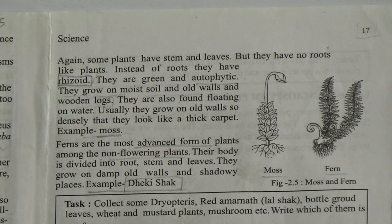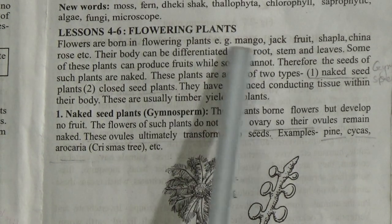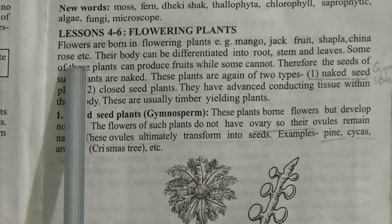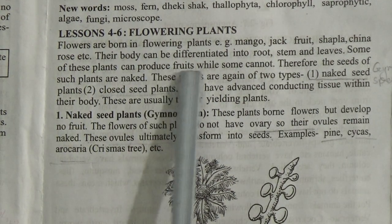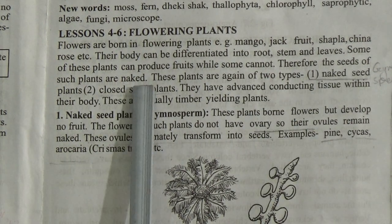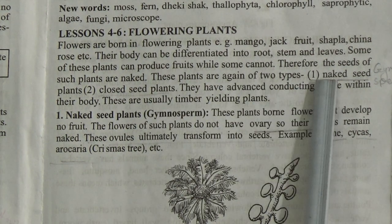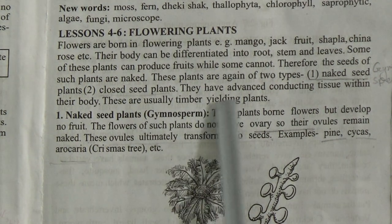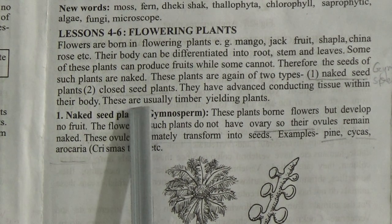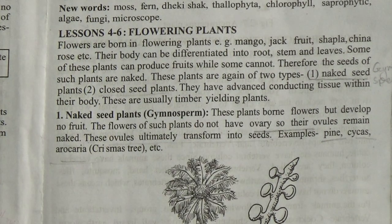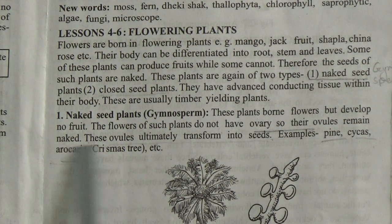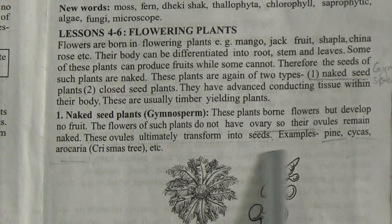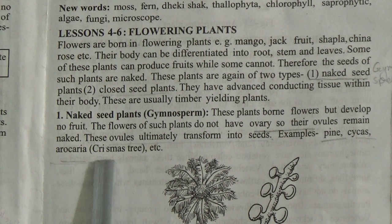Now we will read Lessons 4 to 6: Flowering Plants. Flowers are borne in flowering plants. Examples: mango, jackfruit, shapla, china rose, etc. Their body can be differentiated into root, stem, and leaves. Some of these plants can produce fruits while some cannot, so the seeds of such plants are naked. These plants are of two types: naked seed plants and closed seed plants. They have advanced conducting tissues and are usually timber-yielding plants. Naked seed plants, or gymnosperms, bear flowers but develop no fruit. Their flowers do not have ovaries, so the ovules remain naked and ultimately transform into seeds. Examples: pine, cycas, Araucaria, and the Christmas tree.